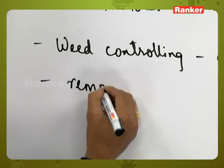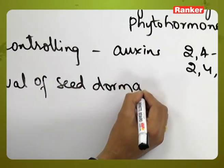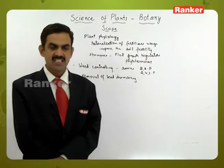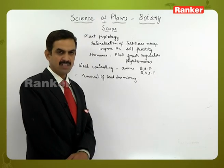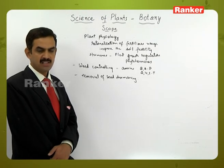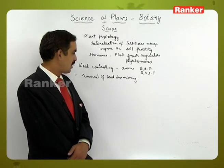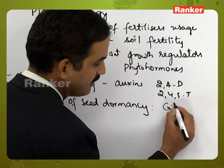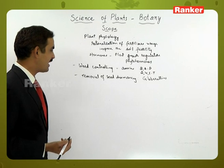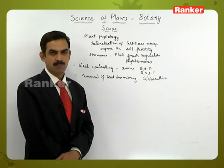Another application is removal of seed dormancy. Dormancy is a resting stage where the seed does not germinate due to abnormal conditions. When seeds are in dormancy, germination takes longer and production may not come in time. Seed dormancy can be removed by gibberellins, a natural plant hormone that promotes seed germination.